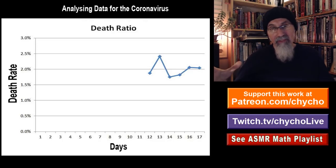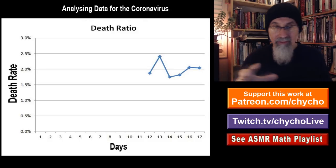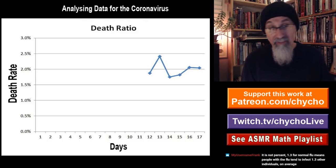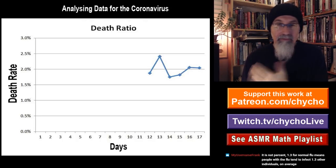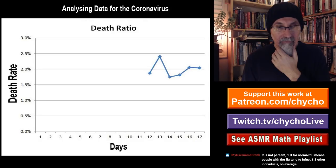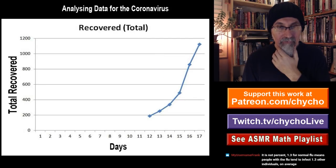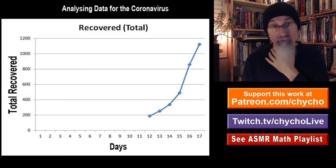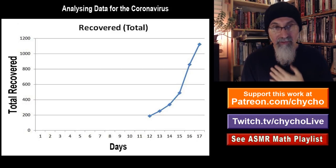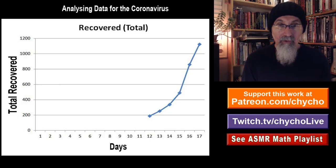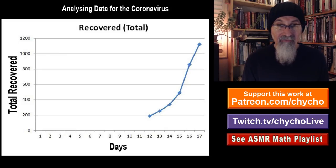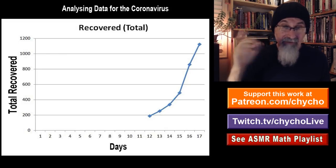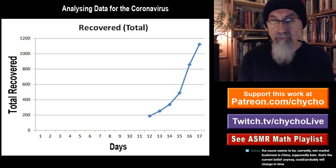Once the virus spreads more outside of China, we'll have a better idea of what the actual death rate is. This next graph is the total number of people that have recovered, and it looks fantastic. It's growing fast — from less than 200 to close to 1,200 in about five days. Within five days the number of people recovered has gone up five times, which is fantastic.